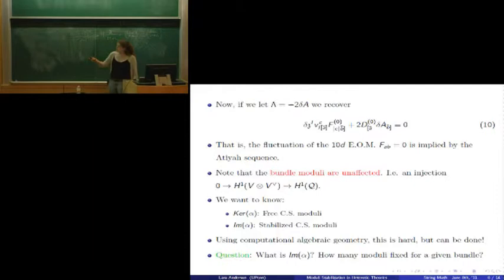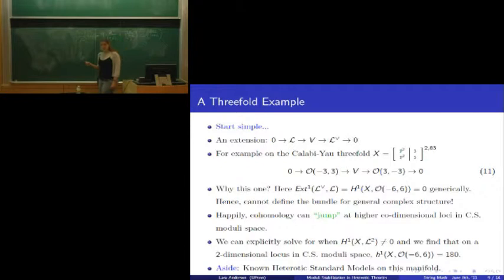I said that I can translate this into an algebraic problem. I want to use tools in computational algebraic geometry to actually directly compute this kernel and image for a given vector bundle. The question we really want to answer is, what is Im(α) for some given geometry? How many moduli are fixed in the presence of a given bundle? Let's start really simple. It turns out that if you were to ask this question for a line bundle, the answer is immediately obvious. The image of an Atiyah map for the line bundle is zero, so all line bundles in Calabi-Yau threefold will deform with their base.